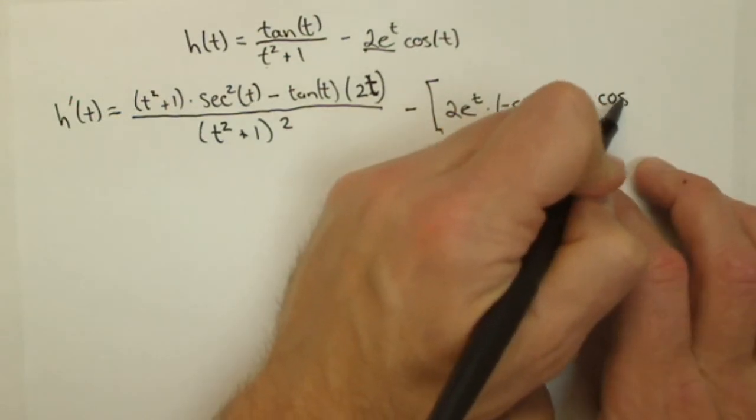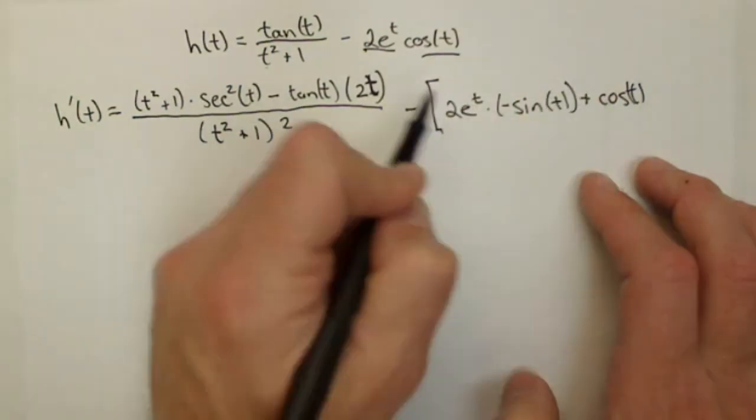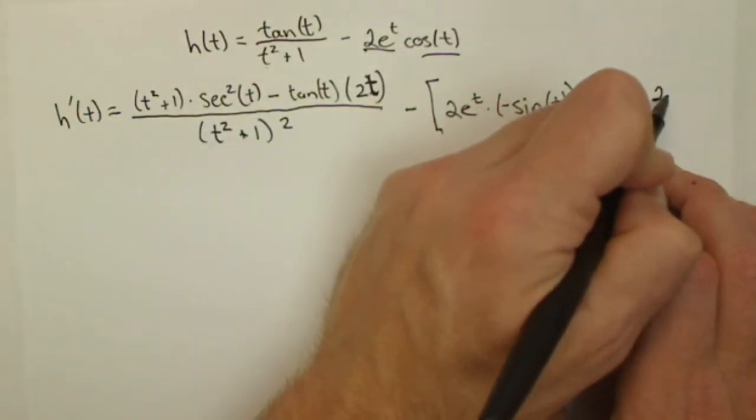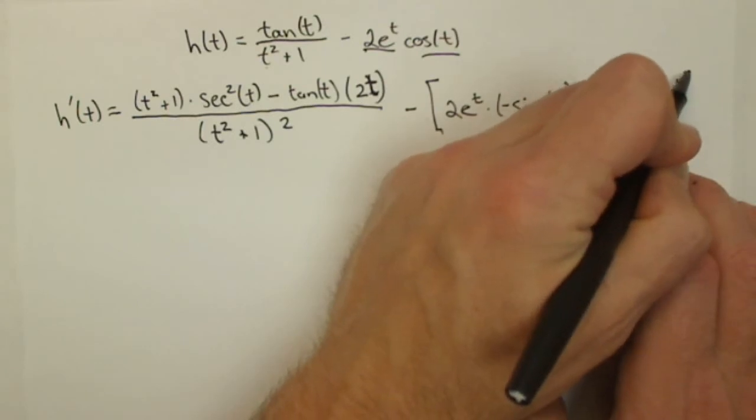now we're going to hold the cosine of t, the second part, constant, times the derivative of 2e to the t, which is just itself, 2e to the t.